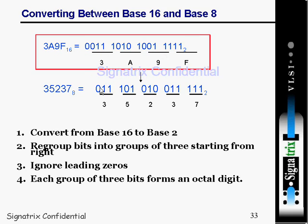Any remaining leading bits are left as zero. In hexadecimal we had groups of 4 bits, but now we regroup into 3 bits. The 3-bit groups yield: 7, 3, 2, 5, 3 — so the octal result is 35237, which is the octal equivalent of hexadecimal 3A9F.